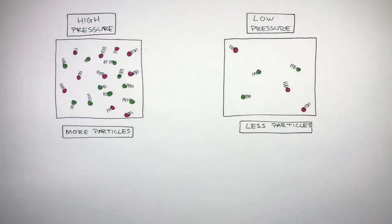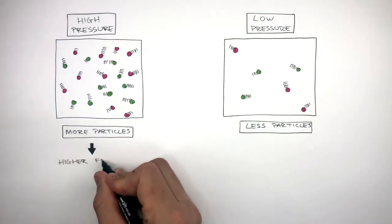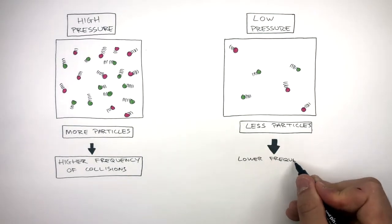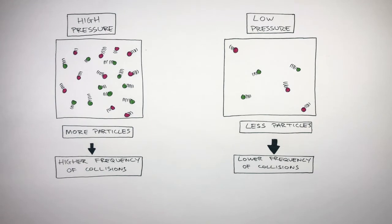The more particles means there is a higher frequency of collisions. This means the particles collide more often. And when there's less particles, there is a lower frequency of collisions. This means the particles collide less often.